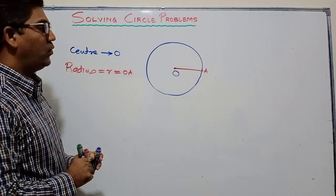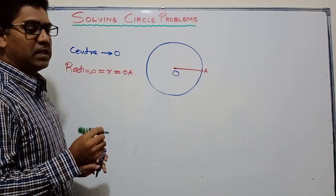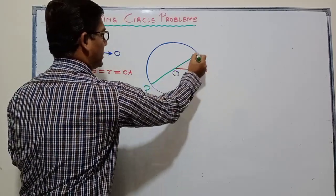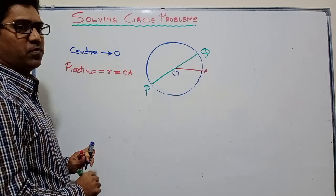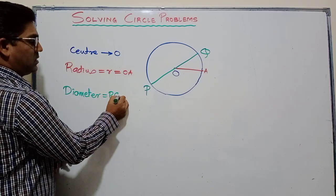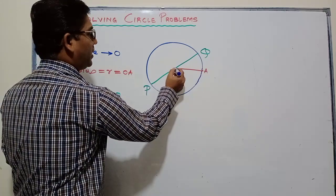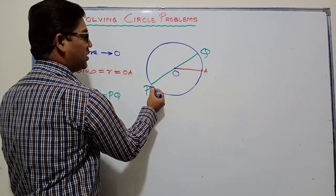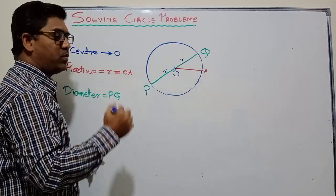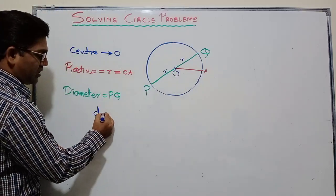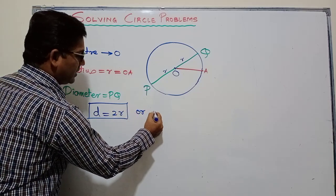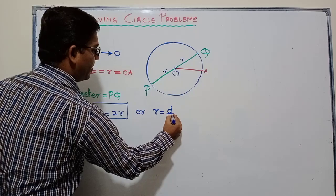If I have a segment joining two points of the circle and it is passing through the center, that segment is known as the diameter of the circle. Segment PQ joins two points of the circle and passes through the center, so PQ is the diameter. In diameter PQ we have two radii — OP is one radius and OQ is another. So one diameter contains two radii, giving us the first formula: radius equals diameter over two.